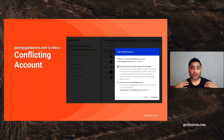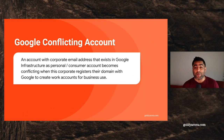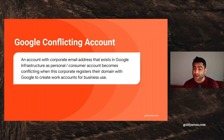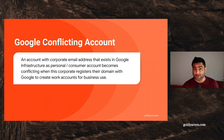This account is a conflicting account because there is a conflict. To recap: an account with a corporate email address that exists in Google's infrastructure as a personal or consumer account becomes a conflicting account when the company registers their domain with Google to create work accounts for using Google's enterprise services like Google Cloud Platform, Google Workspace, or Google Analytics.